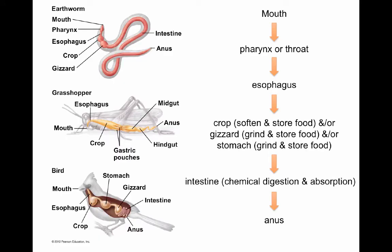In alimentary canals, food goes in through the mouth, through the pharynx or throat, then through an esophagus. It may pass through a crop region to soften food, a gizzard to grind food, and then a stomach for further grinding and enzymatic breakdown. Food then enters the intestine where digestion continues — gastric pouches secrete enzymes — and absorption of particles into cells occurs. The anus is where undigested particles exit.